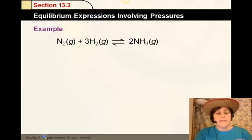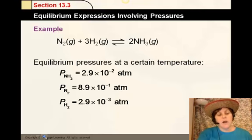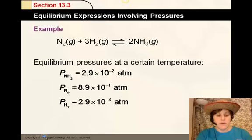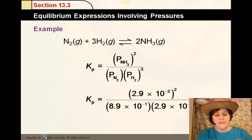Let's look at this example using the same equation. Equilibrium pressures at a certain temperature are, for NH3, 2.9 times 10 to the negative 2 atmospheres; for N2, 8.9 times 10 to the negative 1 atmospheres; and for H2, 2.9 times 10 to the negative 3. The question is, what is the value of Kp? You should always write the equilibrium expression products over reactants. This is shown here. Then you substitute in with the numbers they gave you, squaring and cubing where appropriate. And when you work it out, you get 3.9 times 10 to the fourth. That's how you find Kp.